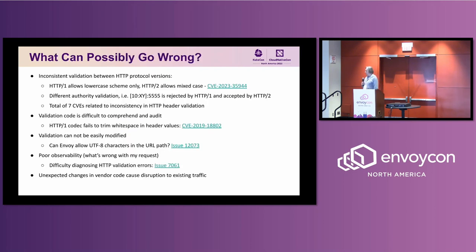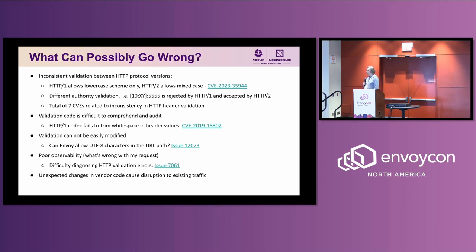So what are the problems with this situation? First of all, the validation is not consistent across different HTTP versions. This can be annoying at times when a request that is accepted over HTTP/1 is rejected over HTTP/2, or it can actually lead to fairly serious consequences — such as when a codec allows a carriage return in a header value. This can be abused to smuggle requests when Envoy is configured to proxy across protocol versions, which is a very common scenario. We have a total of seven CVEs that are one way or another related to inconsistencies in HTTP validation.